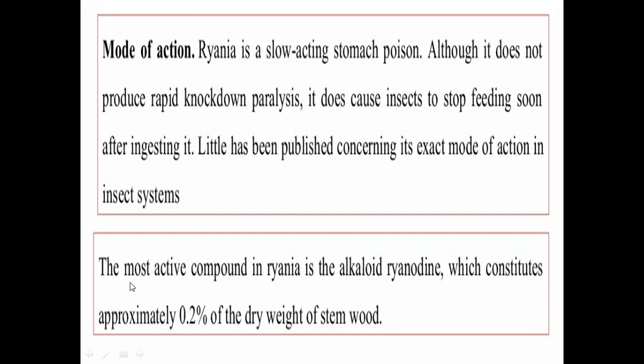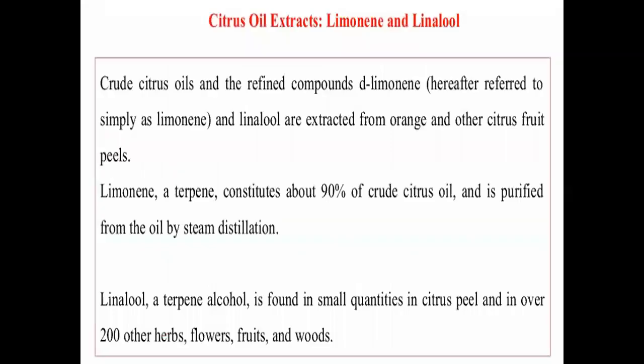The most active compound in Rania is the alkaloid ryanodine, which constitutes approximately 0.2% of the dry weight of stem wood — that is the location or plant part where ryanodine-type alkaloids are found in the Rania plant.